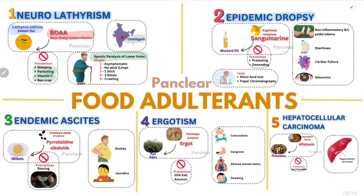Second, epidemic dropsy: Argemone mexicana oil mixed with mustard oil contains sanguinarine, causing bilateral non-inflammatory pitting edema, diarrhea, cardiac failure, and glaucoma. Prevention: nitric acid test and paper chromatography test — the most sensitive test is paper chromatography.